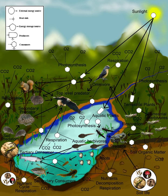A gradient exists between trophic levels running from complete autotrophs that obtain their sole source of carbon from the atmosphere, to myxotrophs that are autotrophic organisms that partially obtain organic matter from sources other than the atmosphere, and complete heterotrophs that must feed to obtain organic matter. The linkages in a food web illustrate the feeding pathways, such as where heterotrophs obtain organic matter by feeding on autotrophs and other heterotrophs. There are different kinds of feeding relations that can be roughly divided into herbivory, carnivory, scavenging and parasitism.